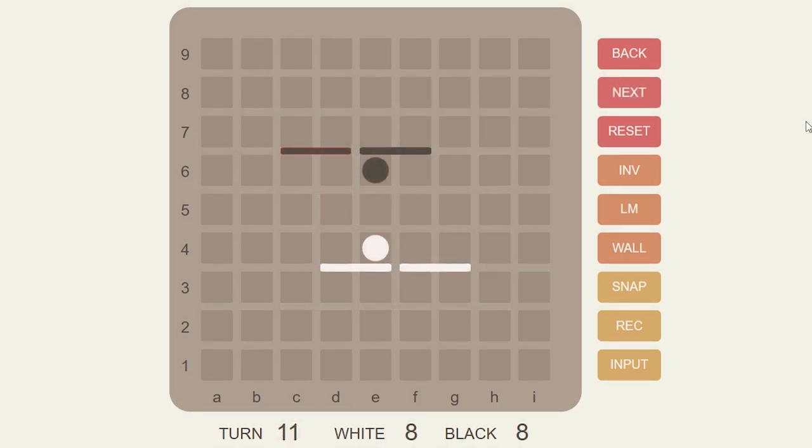You have to understand that everything happens at this point in time. It's a critical point for White because White should not place a wall here but instead a vertical wall here.